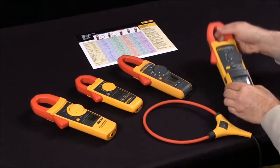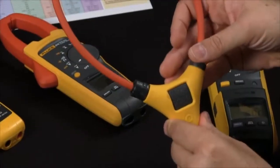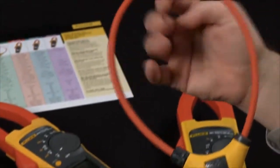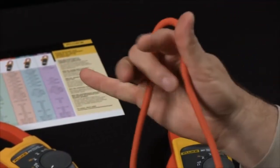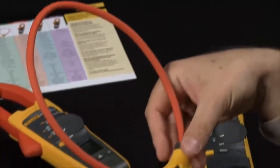If you also want to increase your capabilities, we have the iFlex. The iFlex allows you to go around multiple conductors of the same phase, or you can pick a single wire out of a conduit or an elbow. The iFlex will work with any of our new generation clamp meters.